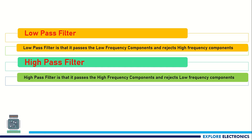First, what is a low-pass filter? A low-pass filter is a circuit which passes only low-frequency signals as output and rejects all the high-frequency signals that come as input to the circuit. A high-pass filter is exactly the reverse, where it passes high-frequency signals to the output and rejects all the low-frequency signals.